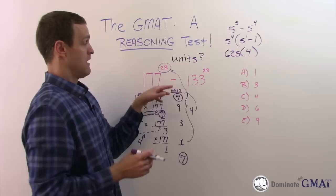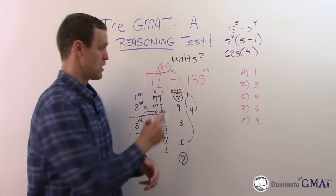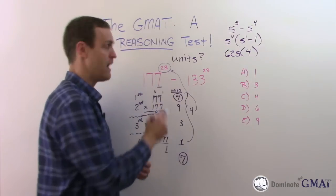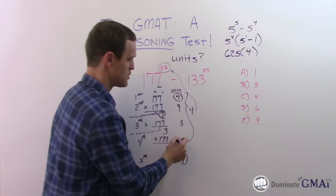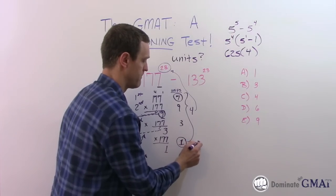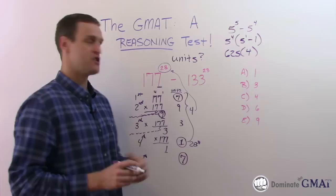So counting through 1, 2, 3, 4, 5, 6, 7, 8, 9, 10, 11, 12, up to 28 - at the 28th power, the unit's digit will be 1. This outcome, 177 to the 28th power, will be something really big and long with 1 as the last number.